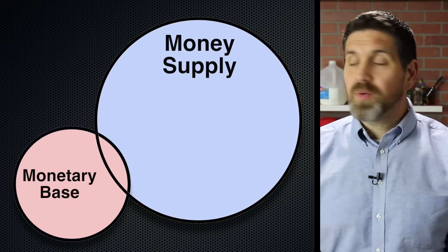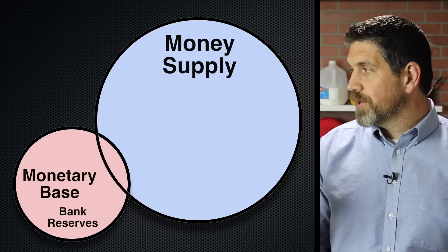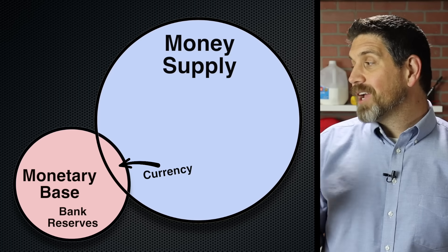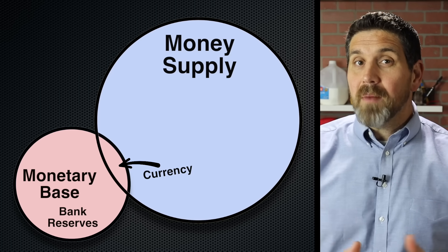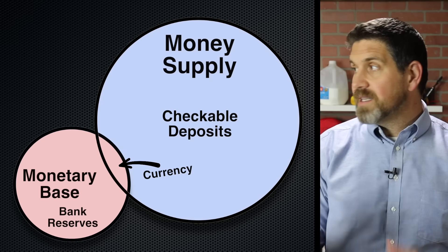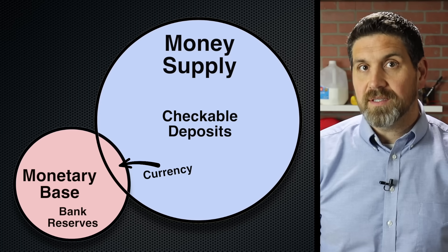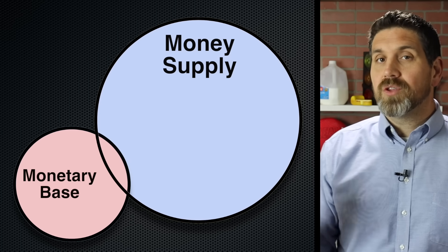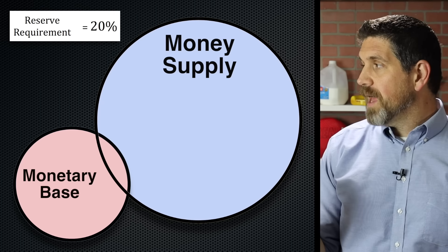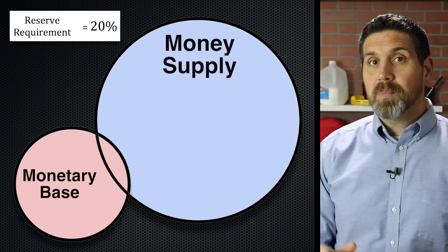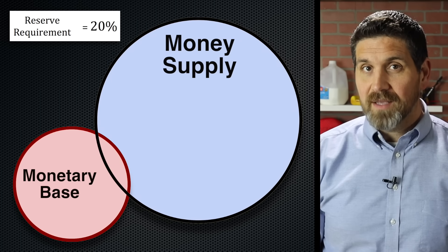First, we have to differentiate between the monetary base and the money supply. The monetary base is made up of bank reserves, which are not part of the money supply, and currency in circulation, which is part of the money supply. The rest of the money supply is made up of checkable deposits — money in checking accounts that you can use to buy goods and services. The ratio of the monetary base to the money supply is the money multiplier. So if the reserve requirement was 20%, making the money multiplier five, the money supply would be five times bigger than the monetary base.